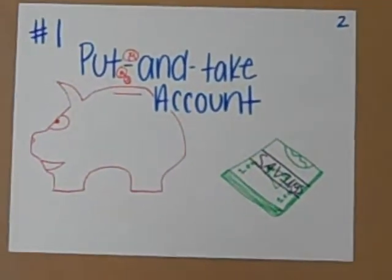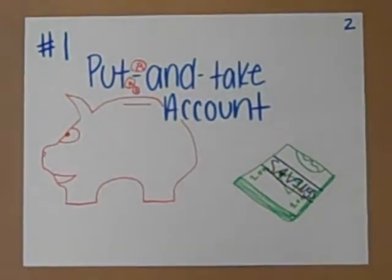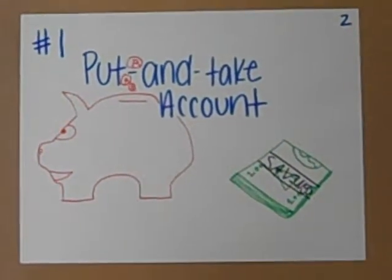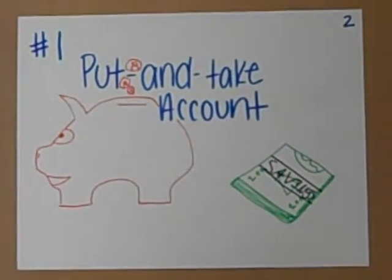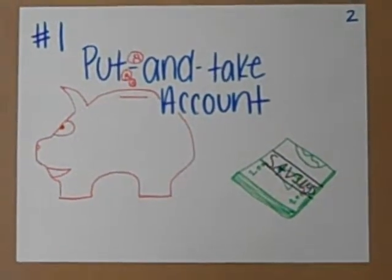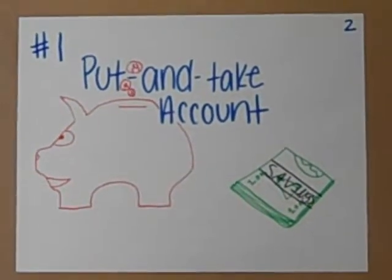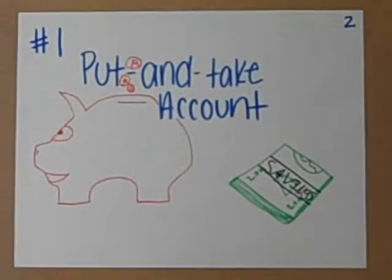Number one: put and take account. An example of a put and take account is a checking account. On a put and take account, there is almost no risk, no return, and very high liquidity.